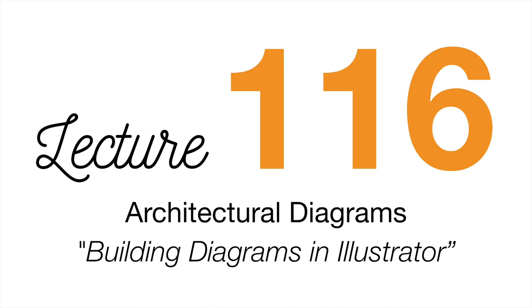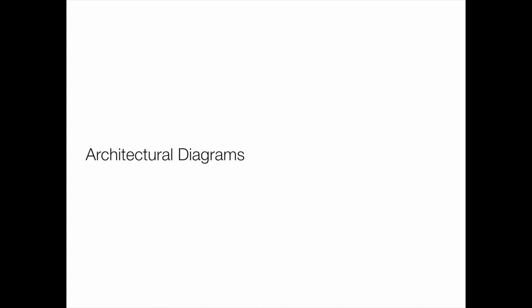Today we're going to talk about architectural diagrams, and then we'll move into some other advanced techniques in Illustrator including live paints, brushes, and those kinds of things. Diagramming is something absolutely critical to learn, and this lecture is geared toward architecture students because it's something you have to do all the time. That said, those in industrial design can't dismiss it—the concepts are the same. My background is in architecture, so that's the focus here.